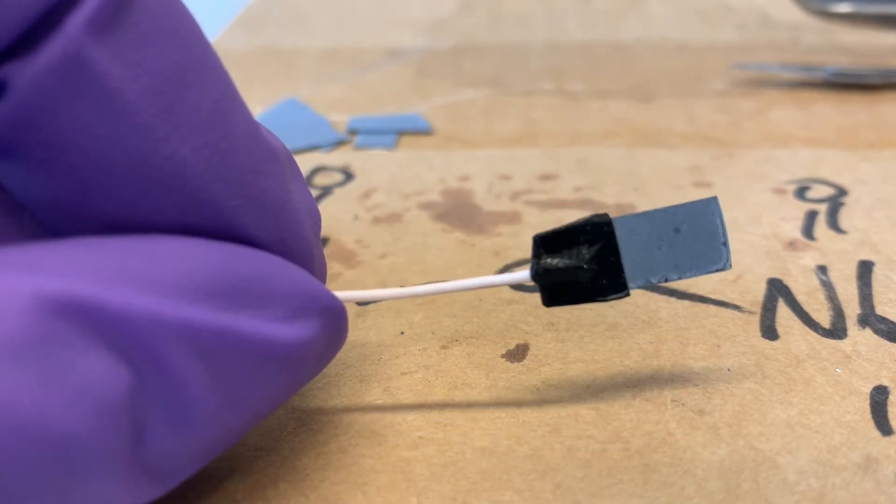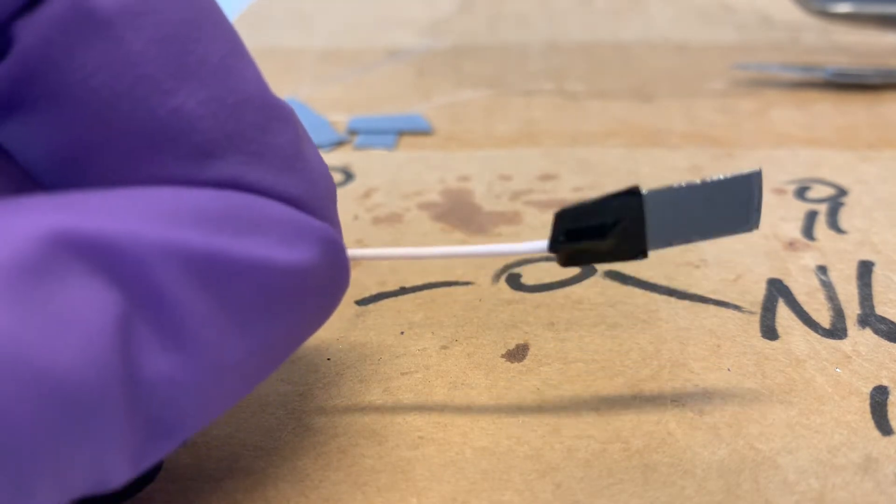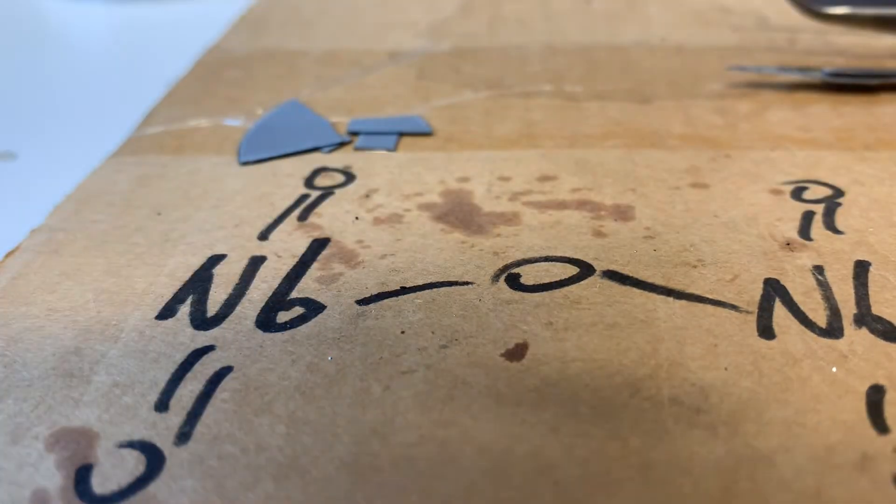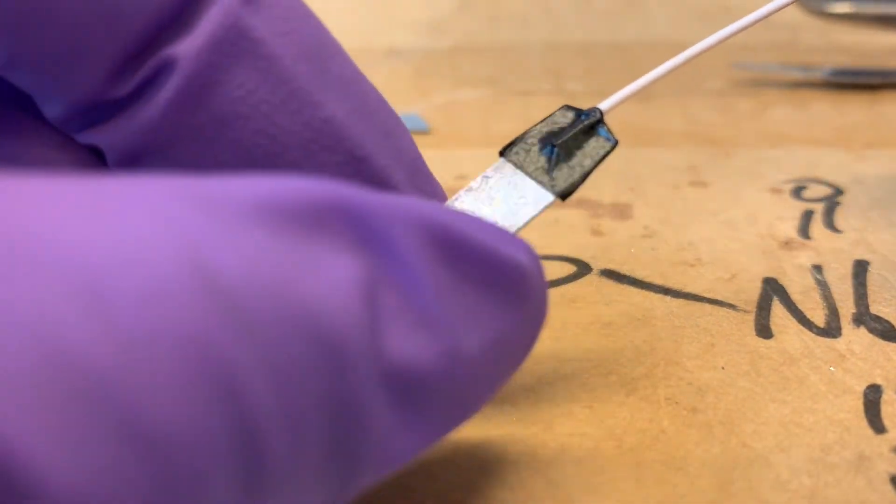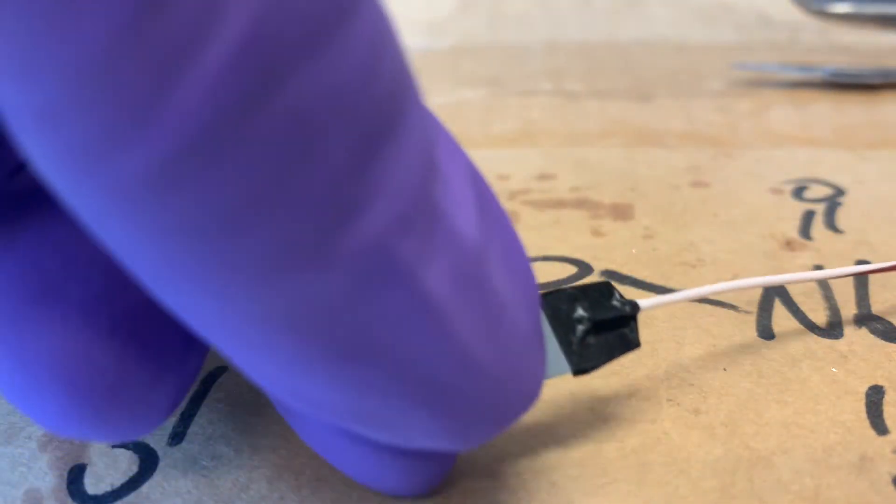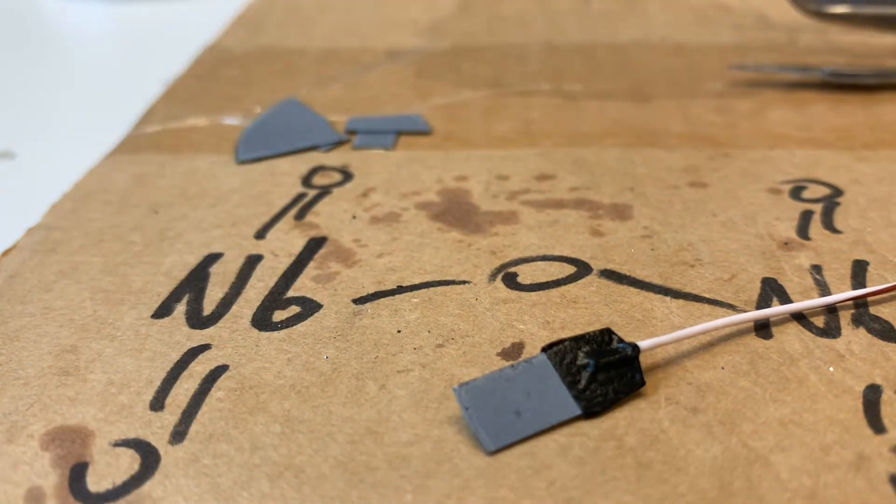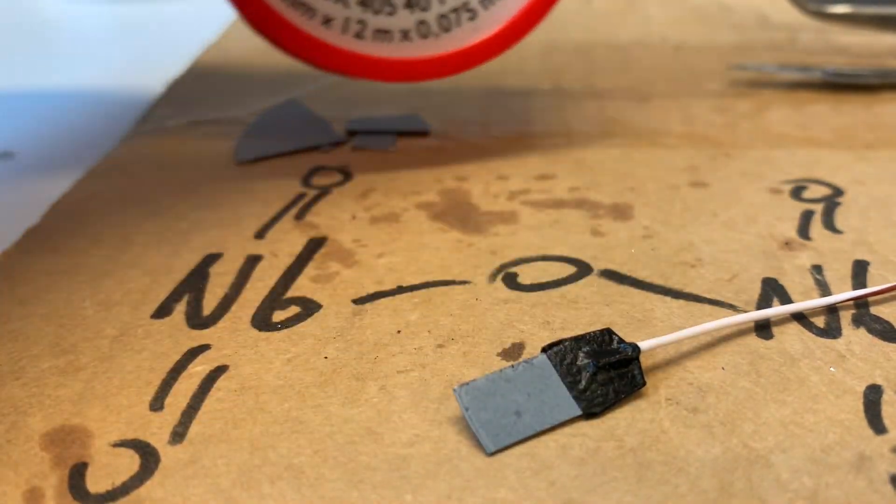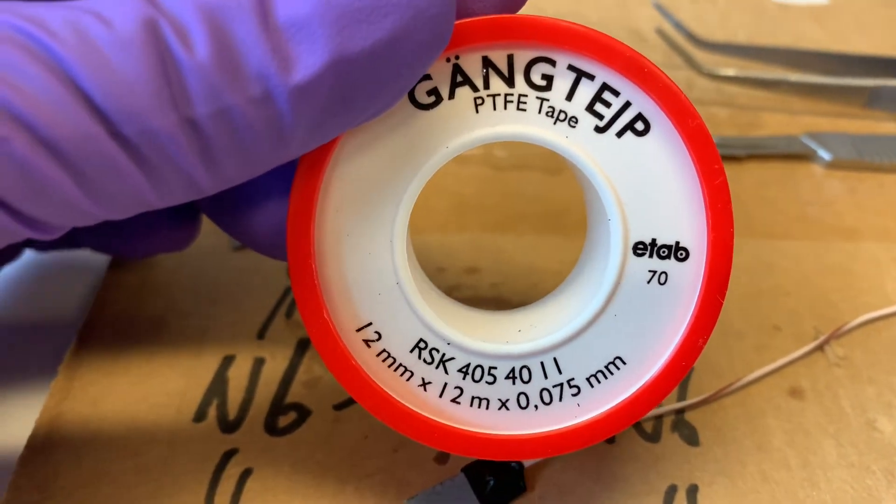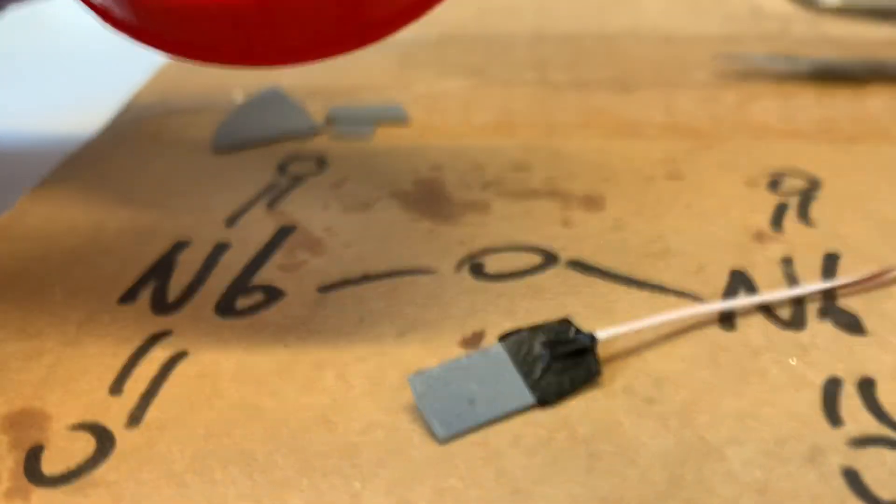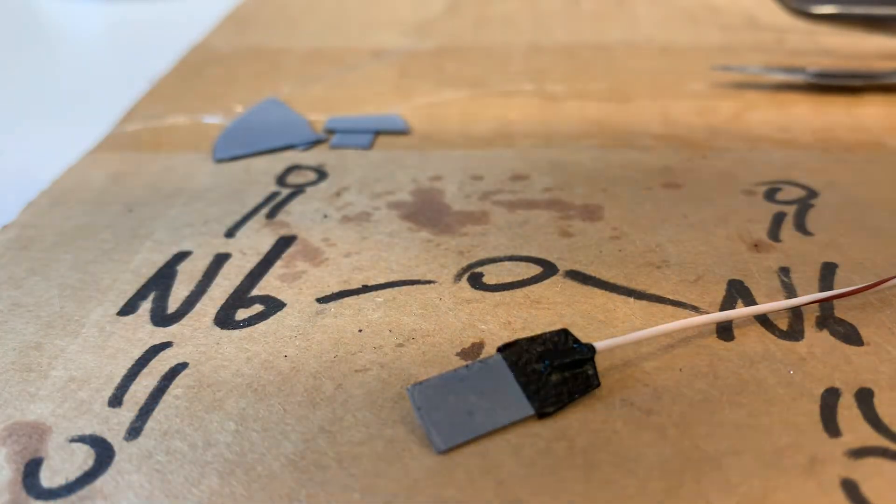But now that you have the wire connected to the surface, you need to insulate it. Because you don't want to have this region exposed while you're doing your measurements. And for the insulation, I use teflon tape. Teflon tape, PTFE. And you can easily buy this in the chem shop here at the university.